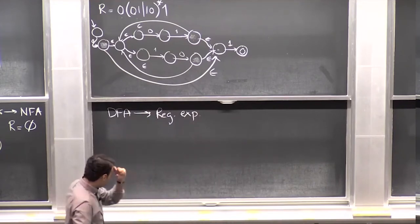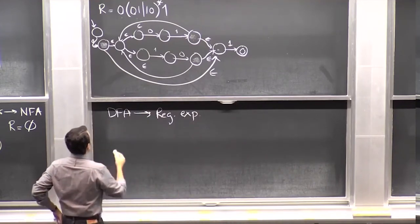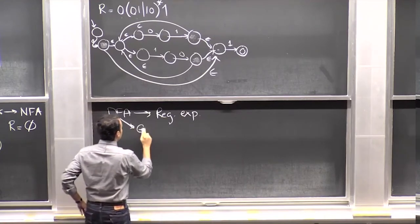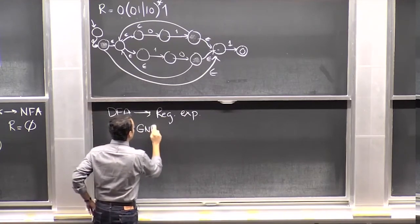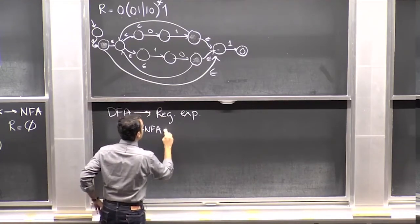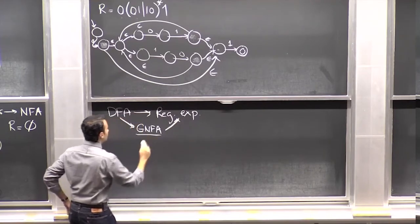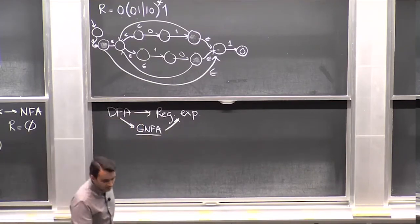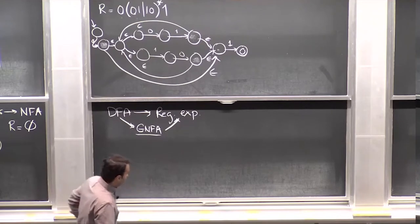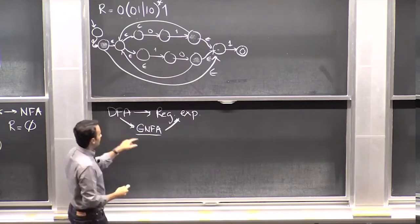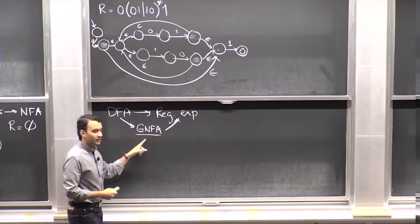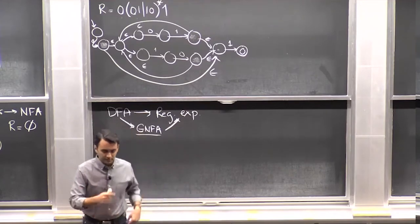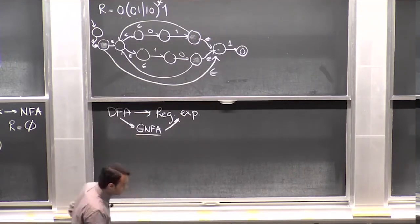Let's do the slightly harder direction: given a DFA, you can convert it into a regular expression. The way we're going to do this is by introducing an intermediate machine model called a Generalized Non-Deterministic Finite State Automaton (GNFA). We're going to convert a DFA to this more general object and this general object back to a regular expression, completing this part of the proof.